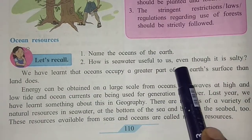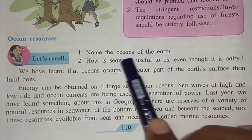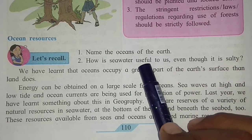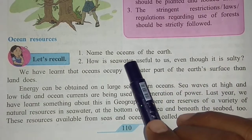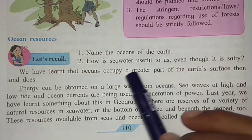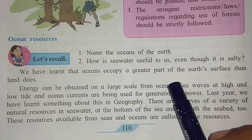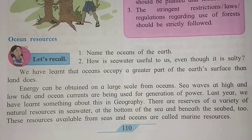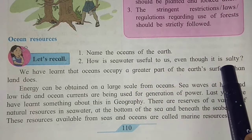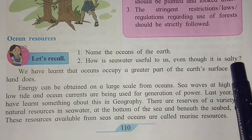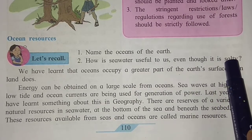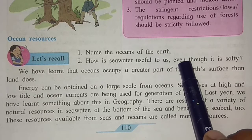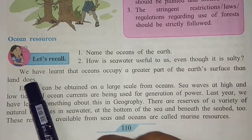How is sea water useful to us even though it is salty? Mostly we obtain salt from sea water. And because of the salt, the density of water decreases, which allows ships to float on it very easily — it is used for transportation purposes. If the salt decreases, ships would sink lower and would need to consume more fuel. Due to salt, they float easily.